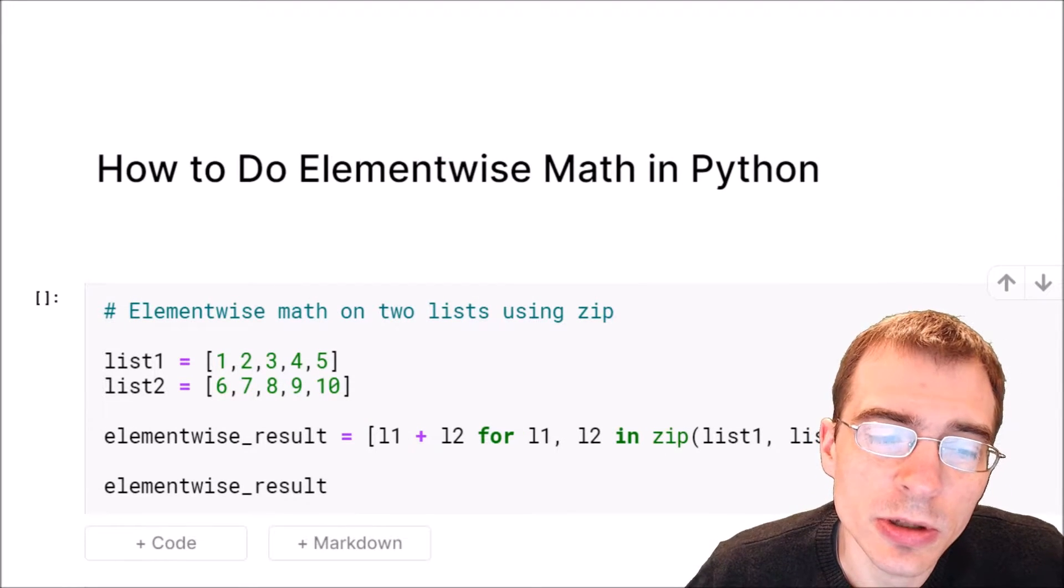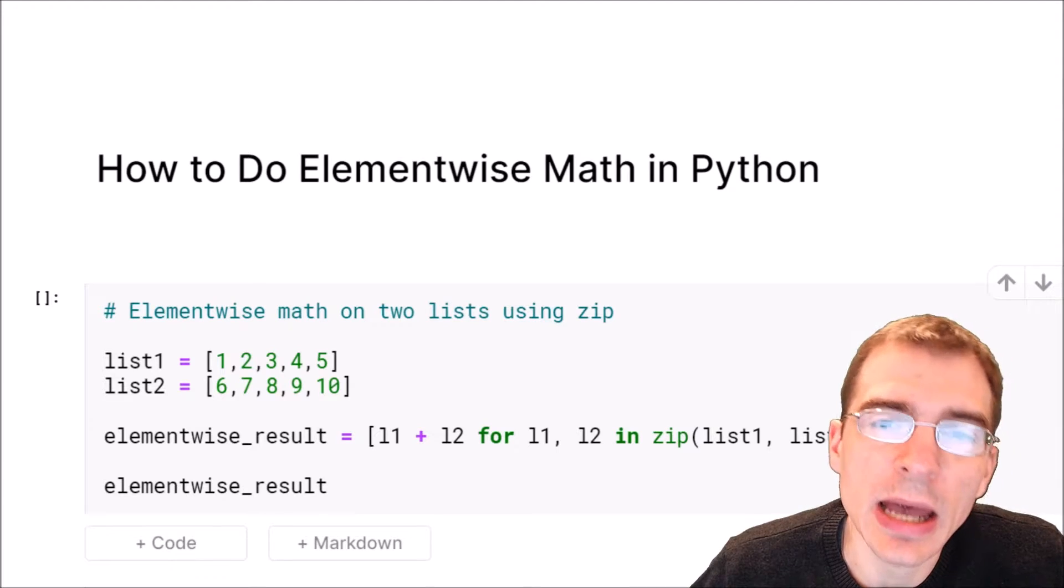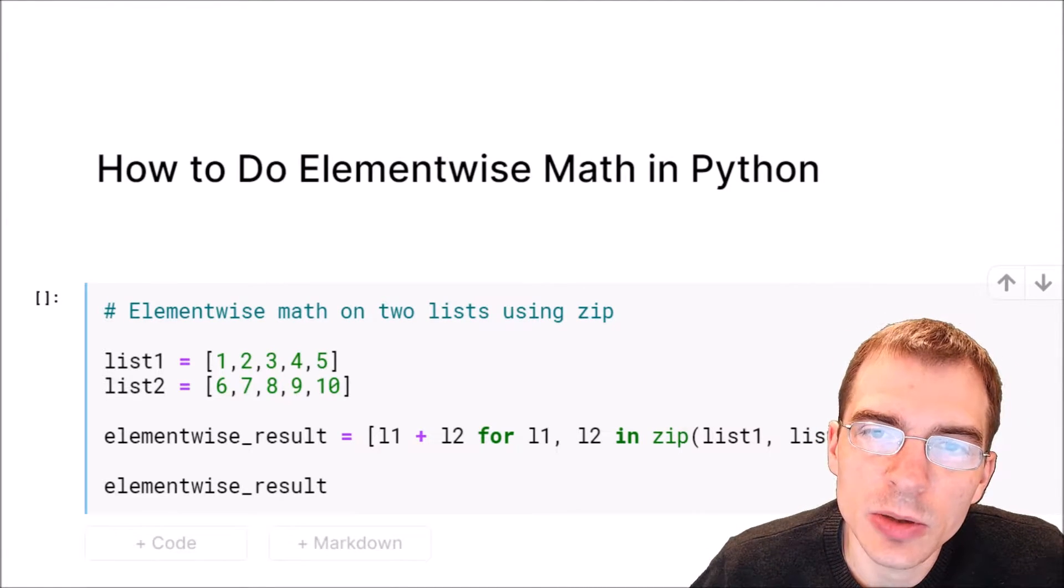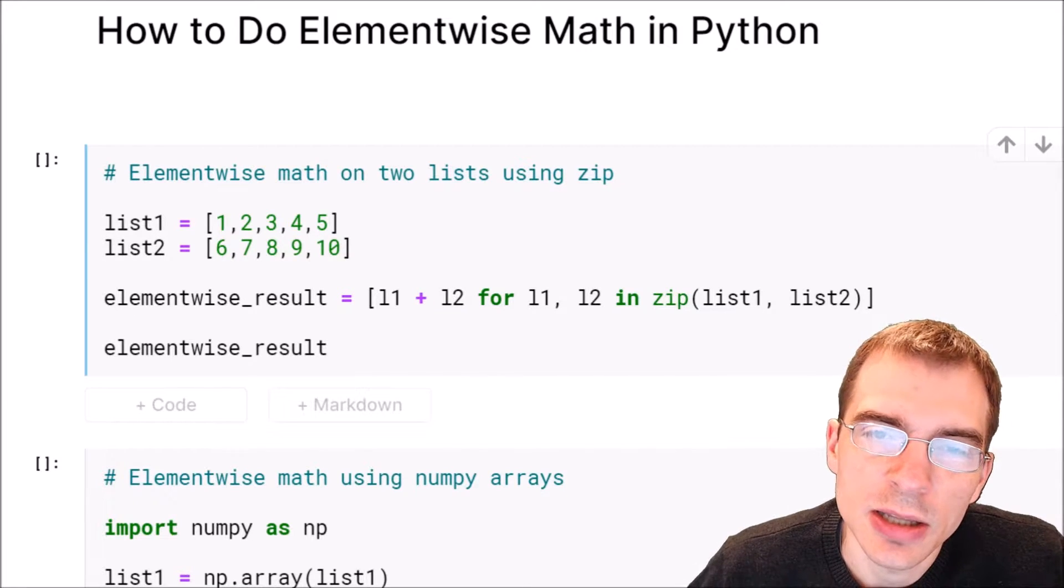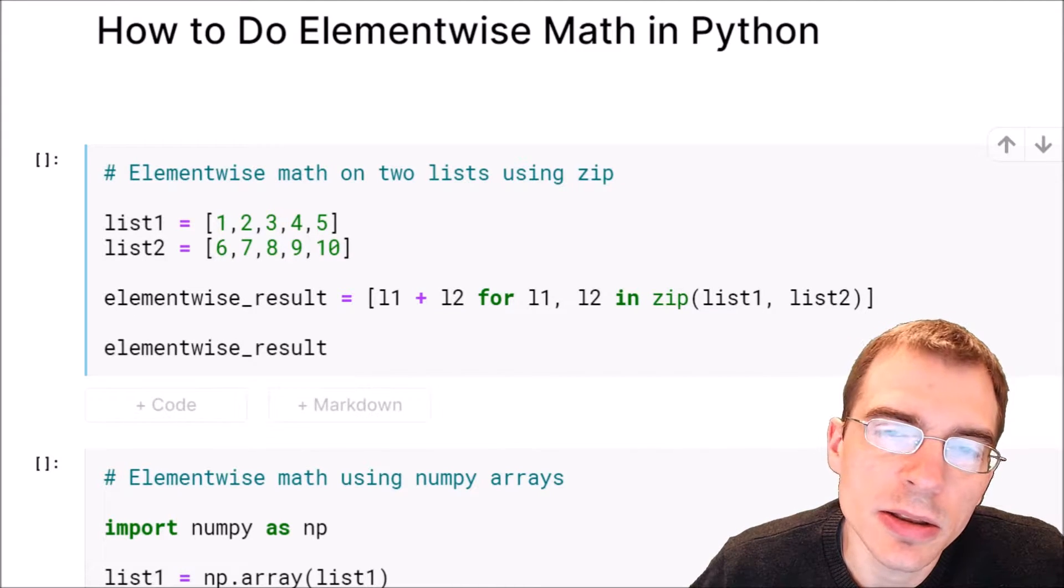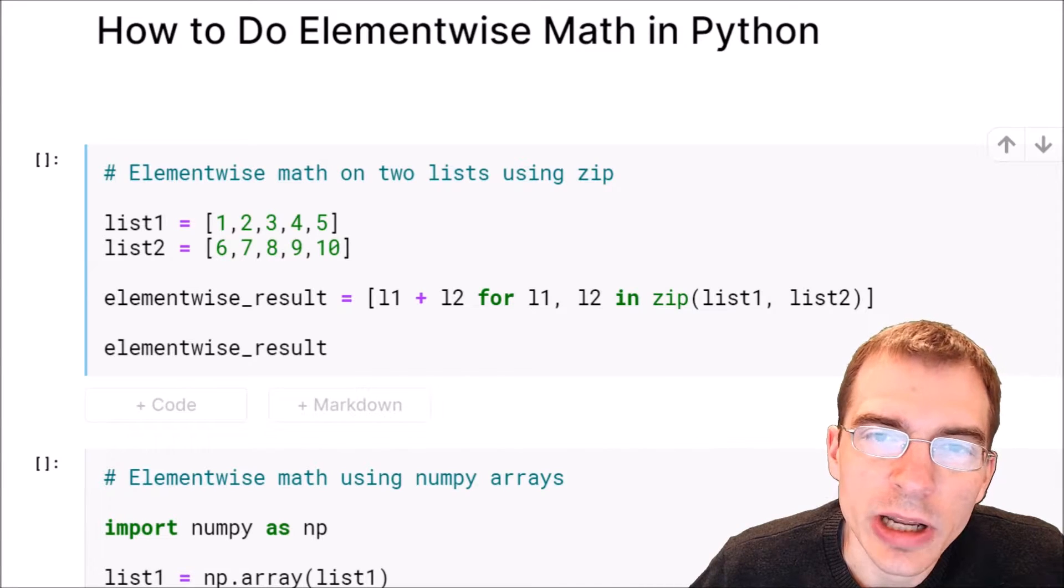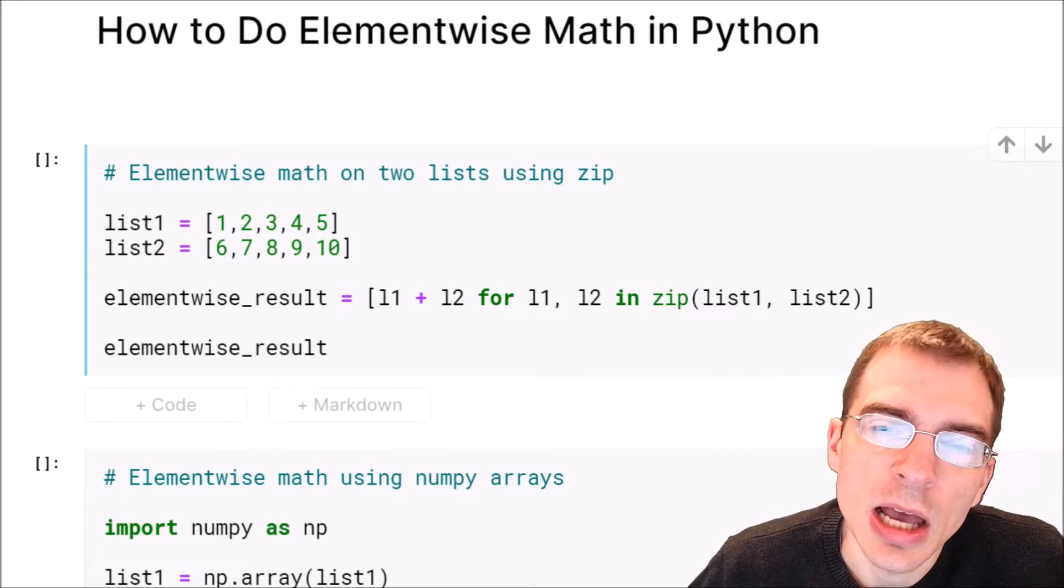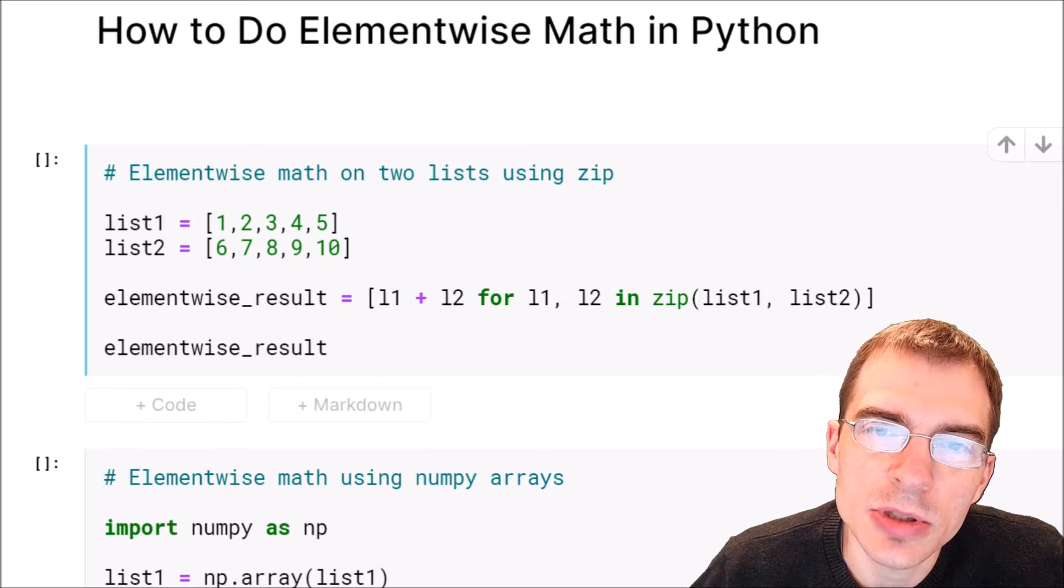In this video, we're going to learn how to do element-wise math operations in Python. In Python, you'll often be working with sequence objects that have multiple elements in them, like lists, arrays, or columns in pandas data frames. You might want to perform operations on each element in two different lists, arrays, or columns based on the position of the elements.